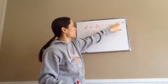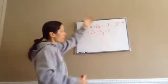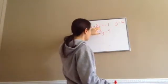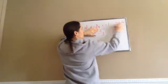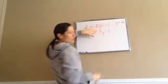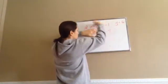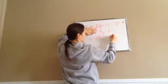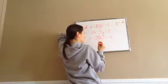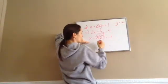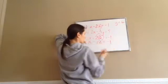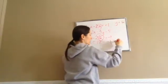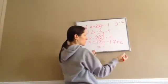Now we found y equals 6. Take that y answer and substitute it into one of the original equations. I'll use equation A: x minus 2 times 6 equals negative 1. So x minus 12 equals negative 1. Move the minus 12 across to become plus 12: x equals negative 1 plus 12, so x equals 11.